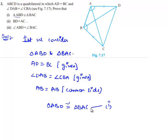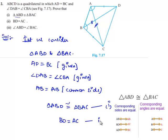Now we know that when triangles are congruent, their corresponding sides and corresponding angles will be equal. Therefore, BD is equal to AC, which is our second result. And the corresponding angles, angle ABD and angle BAC, will also be equal, which is the third result required.